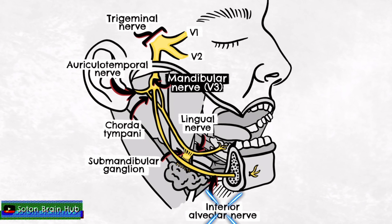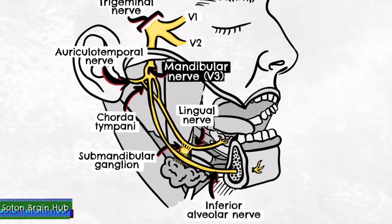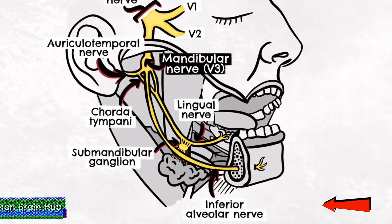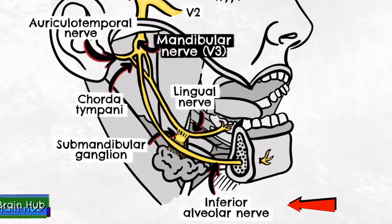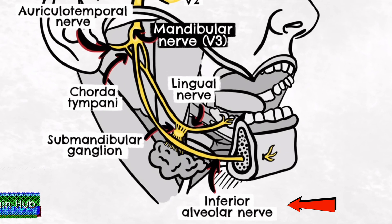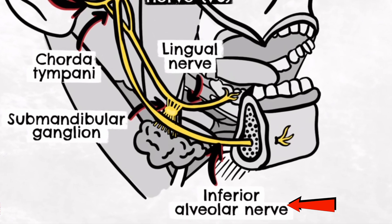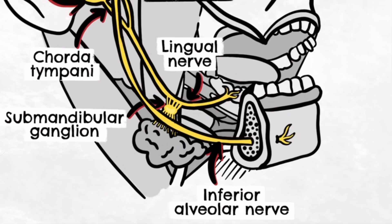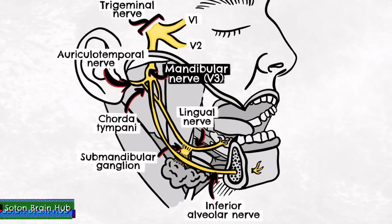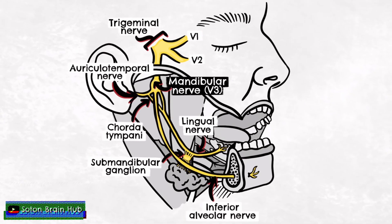Let's now consider the inferior alveolar nerve. This nerve is both sensory and motor. The nerve enters the mandibular bone via the mandibular canal, and while travelling through this canal it passes branches to provide sensory innervation to the lower teeth. The nerve then exits the mandibular bone via the mental foramen, where it becomes the mental nerve and provides sensory innervation to the chin and the lower lip.